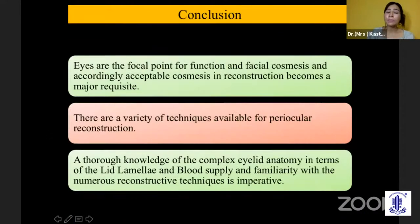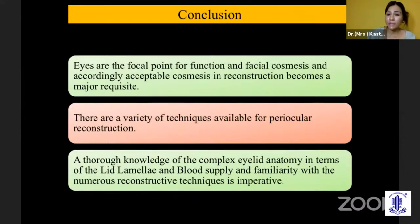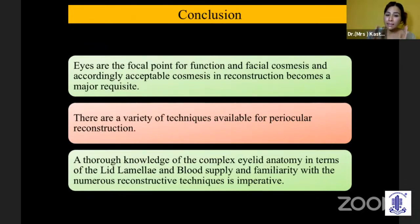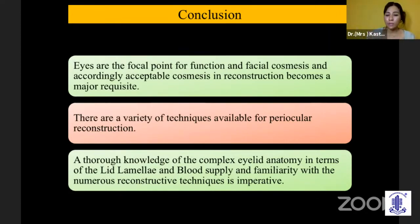In conclusion, eyes are the focal point for function and facial cosmesis. There are varieties of techniques available for periocular reconstruction, but most importantly one should have a thorough knowledge of anatomy. You need to replace layer by layer, and you need to know about the flap blood supply and how the angiosomes are designed, which gives a much better outcome.